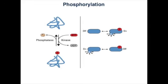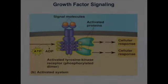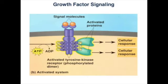The binding of the growth factor to its specific receptor triggers a phosphorylation reaction inside the cell. Phosphorylation — the addition of a phosphate group to a protein molecule — is an important step in cell signaling, because many proteins exist in an on or off state that can be switched by phosphorylation. The enzymes that add phosphate groups to proteins are known as kinases. Enzymes that remove phosphates are known as phosphatases. The exterior end of the receptor protein carries the growth factor binding site, while the other end, which projects inside the cell, carries a kinase site.